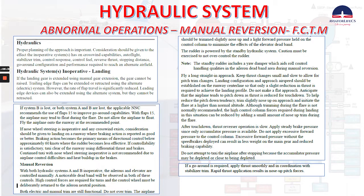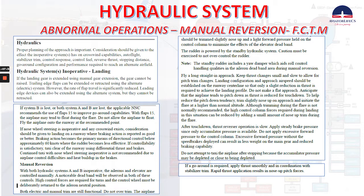Leading edge devices can also be extended using the alternate system, but they cannot be retracted if system B is lost or both systems A and B are lost. The applicable non-normal checklist recommends the use of flap 15 to improve go-around capabilities. With flap 15, the airplane may tend to float during the flare — do not allow the airplane to float; fly the airplane onto the runway at the recommended point. If nose wheel steering is inoperative and any crosswind exists, consider landing on a runway where braking action is reported as good or better. Braking action becomes the primary means of directional control below approximately 60 knots where the rudder becomes less effective.